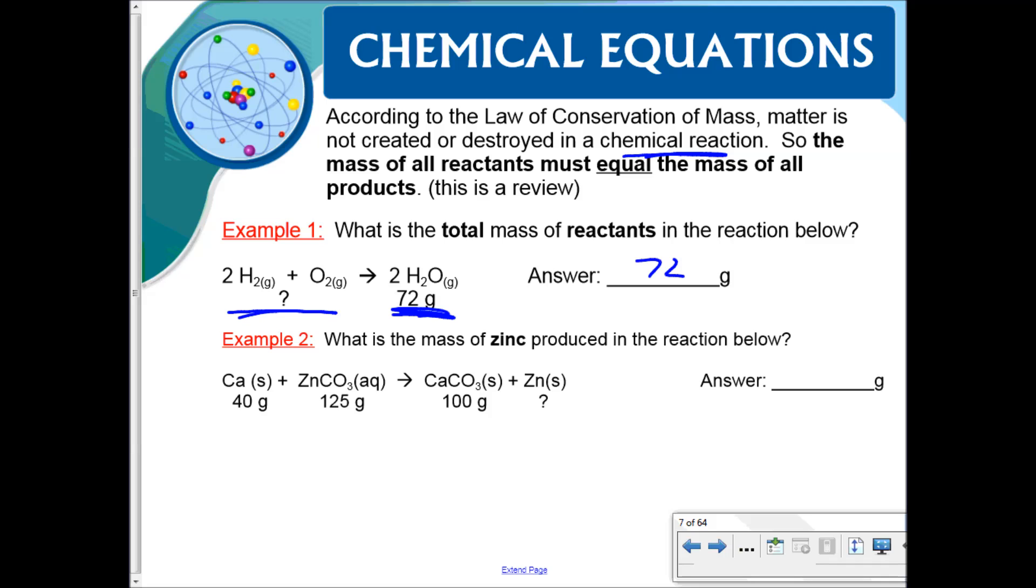What is the mass of zinc produced? Well we'd have to take a moment and say what's 125 plus 40, we get 165. So what does the mass of the zinc have to be? Would be 165 minus the 100, that gets 65 grams, so that would be 65 grams.